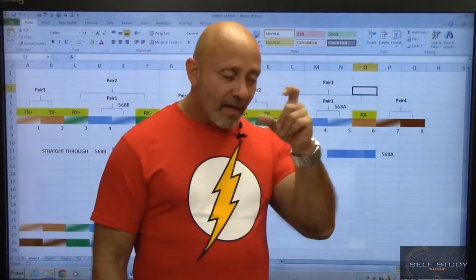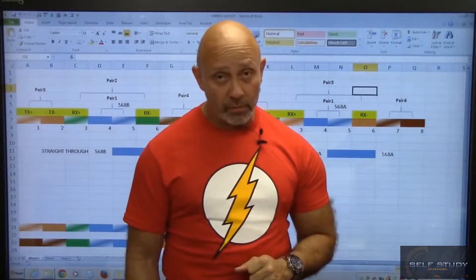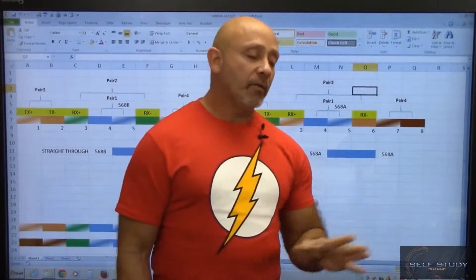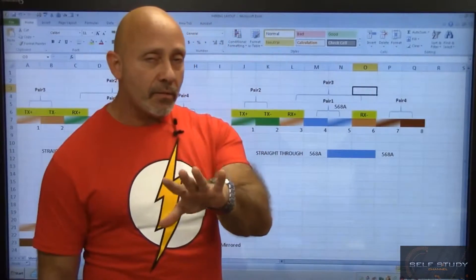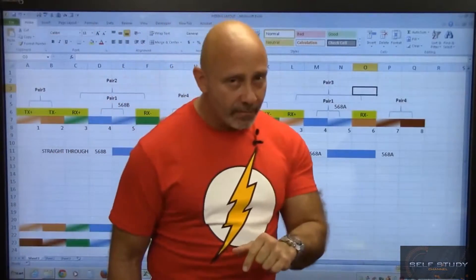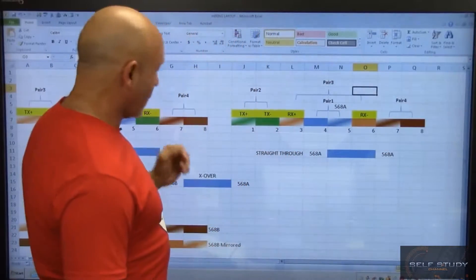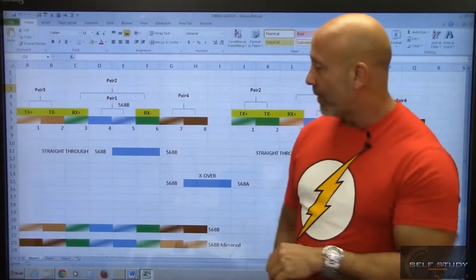Welcome back everyone, now we can talk about the cabling standards that we use. We use basically two standards: 568A and 568B, EIA TIA 568A and 568B. Normally we use the B side. Let me stand over here so you guys can see it better.